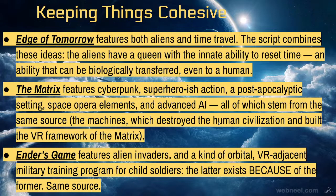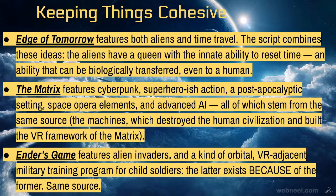Ender's Game features alien invaders and orbital military training programs for child soldiers — the latter exists because of the former, so same source. Edge of Tomorrow similarly features alien invasion and a time loop, but the time loop is a psychic result of the aliens' ability in their blood — when that blood gets into a person, they receive the aliens' ability to reset the time stream. Time travel and aliens in one story, but the time travel comes from the aliens.